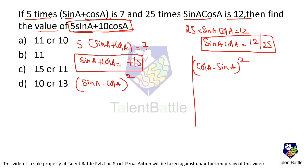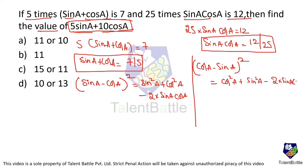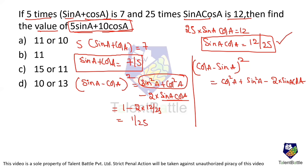Expanding (sin a - cos a)² using the identity (a - b)² = a² + b² - 2ab gives sin²a + cos²a - 2·sin a·cos a. Since sin²a + cos²a = 1, this becomes 1 - 2·sin a·cos a = 1 - 2·(12/25) = 1 - 24/25 = 1/25.